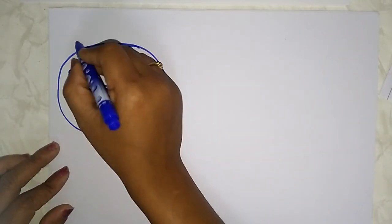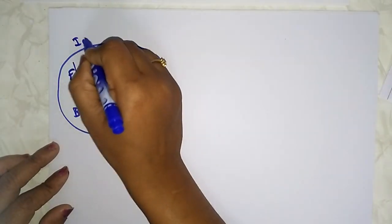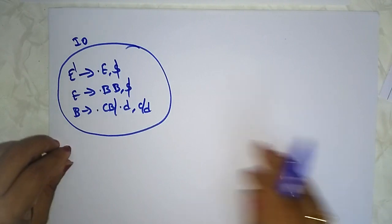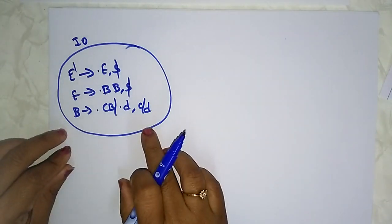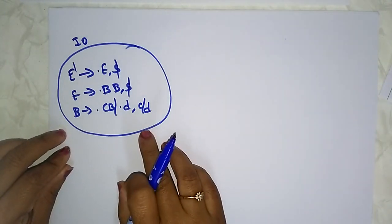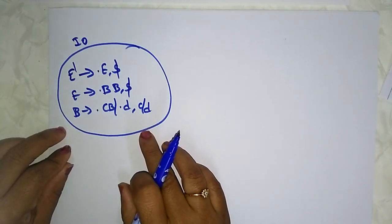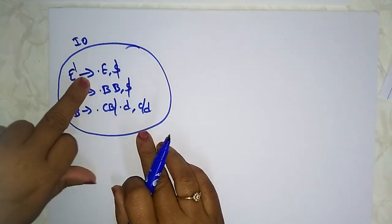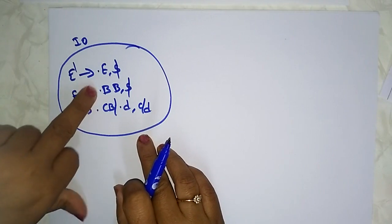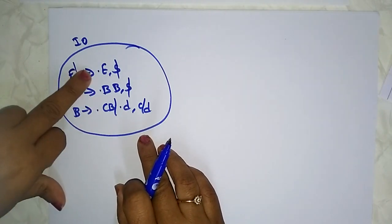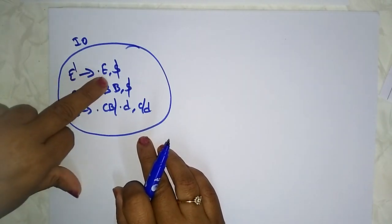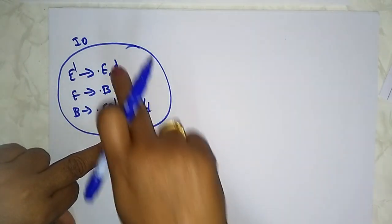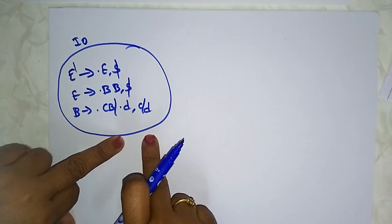Let's take this as I0 — an augmented grammar. CLR(1) consists of LR(0) items along with lookahead values. These are the lookahead values.